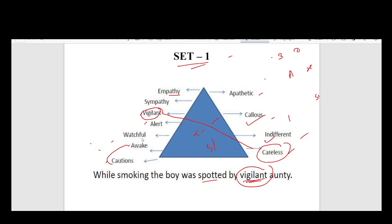For synonyms of vigilant, we have watchful, alert, and awake - all these words have similar meanings of being attentive and careful. These are the synonyms for set one.